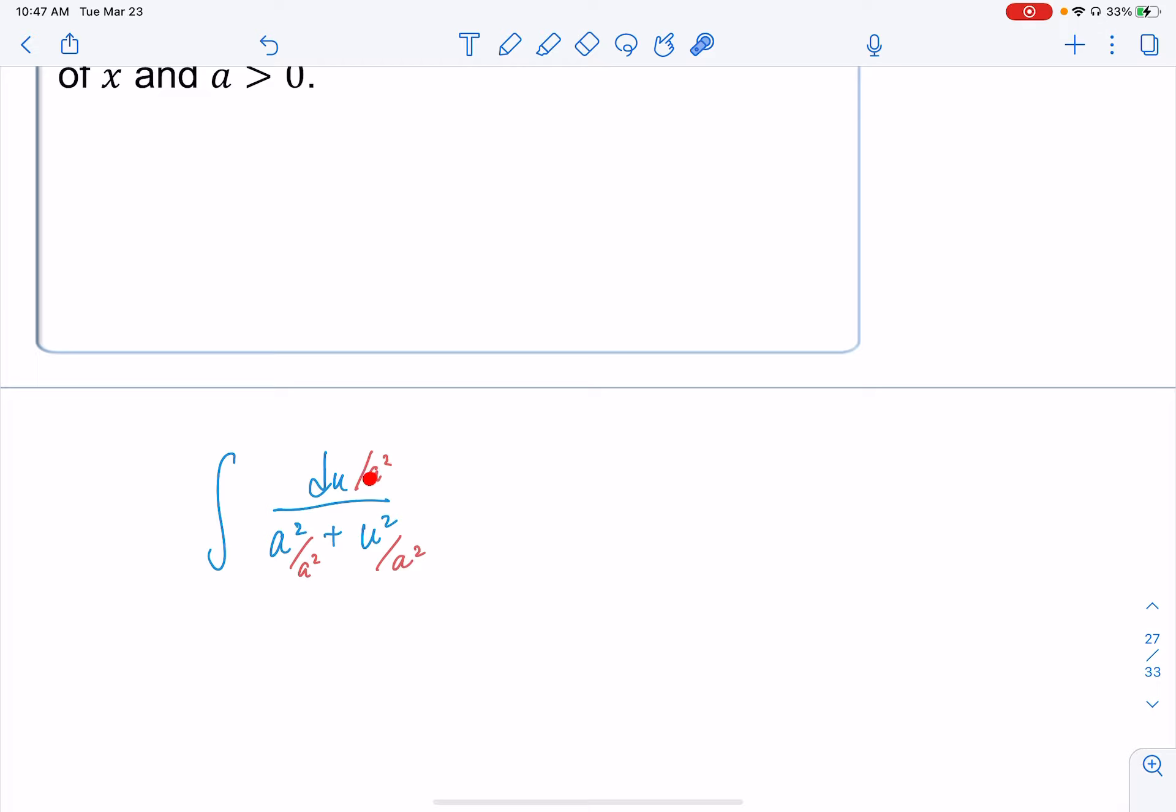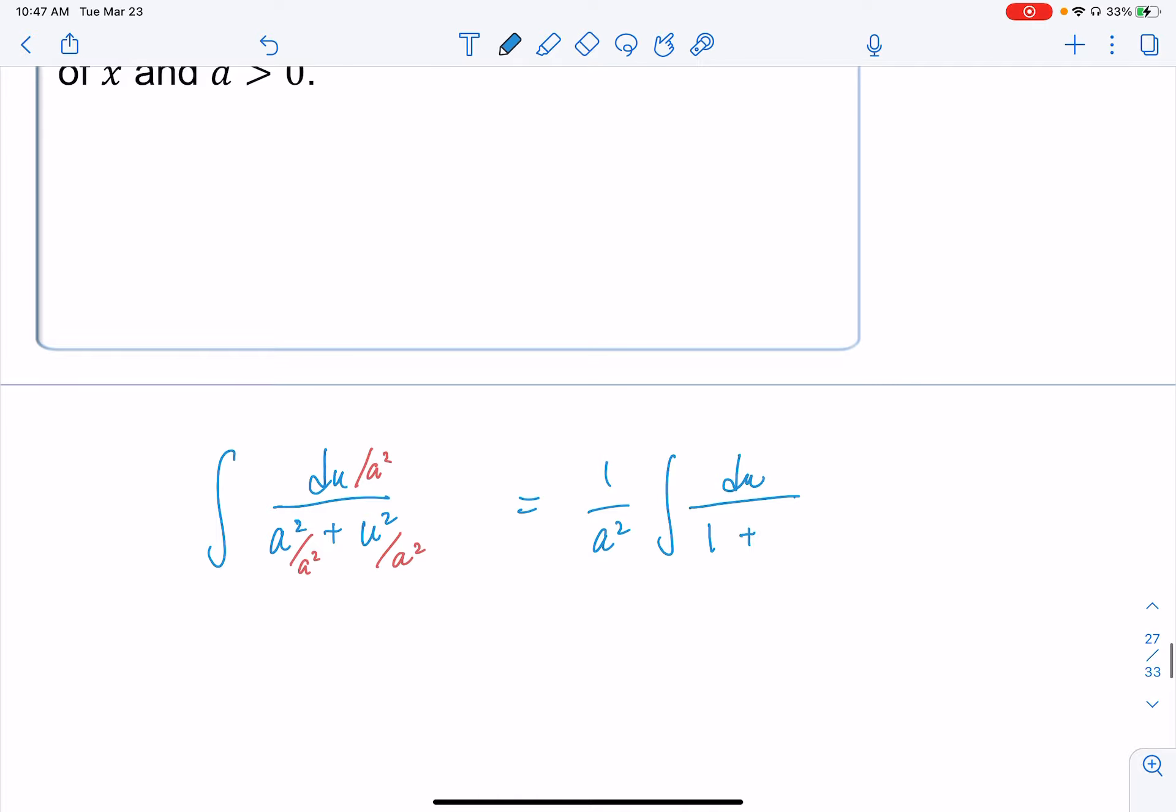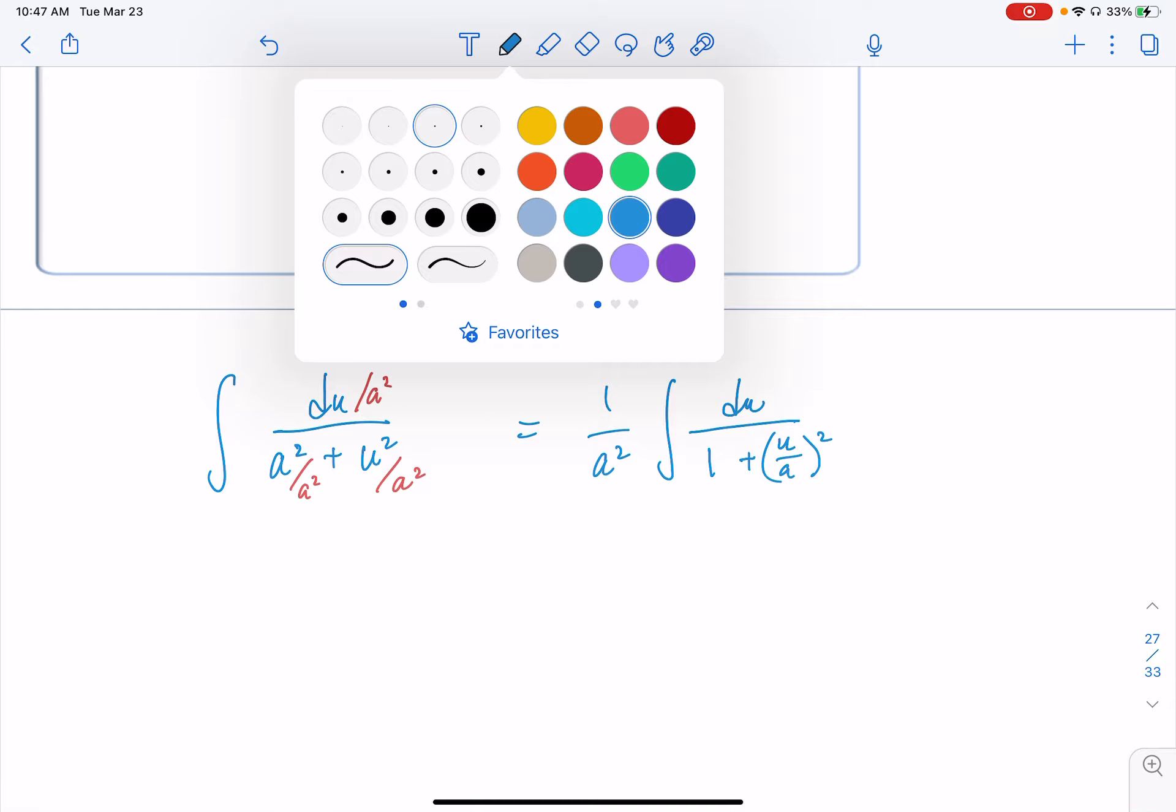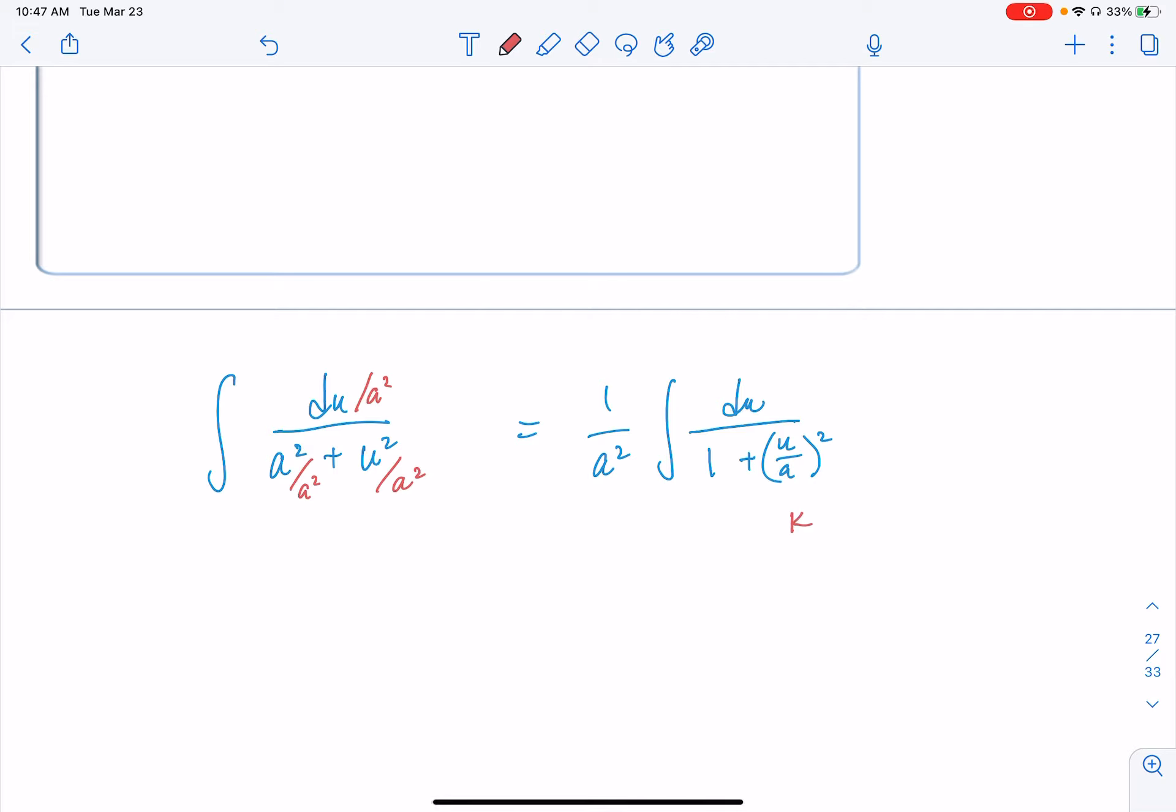Just like before, this du/a² I'm going to pull out front as 1/a². The integral becomes du/a² divided by a² which is 1, plus u²/a² which I'll rewrite as (u/a)². Then I'll have to do substitution, which can be confusing because we already have a u. So let's choose something else—maybe k. We'll do a k substitution.